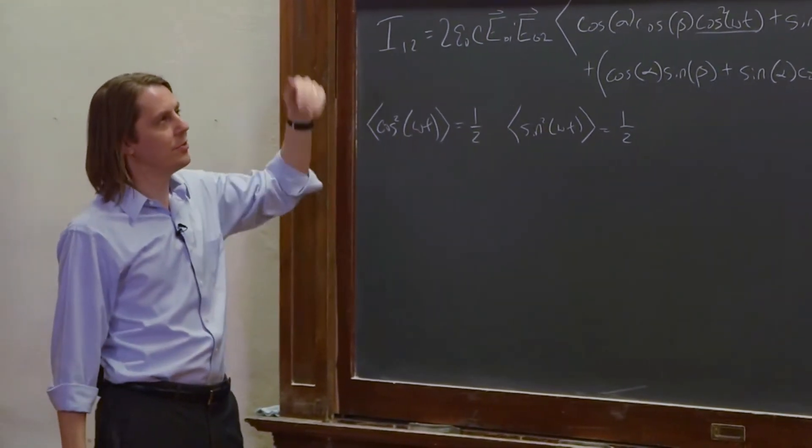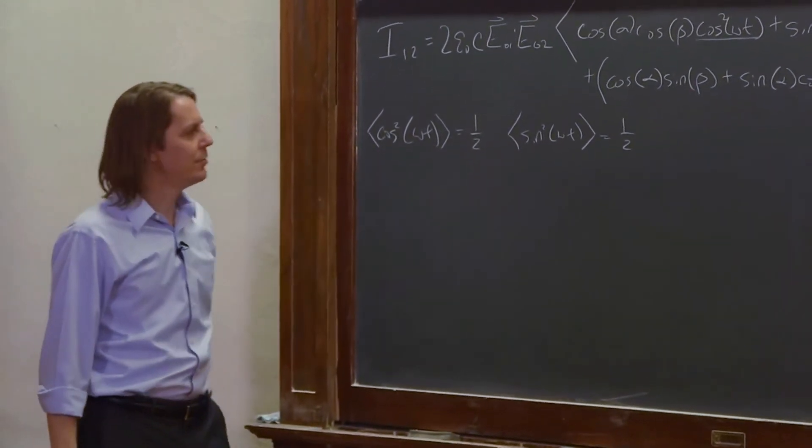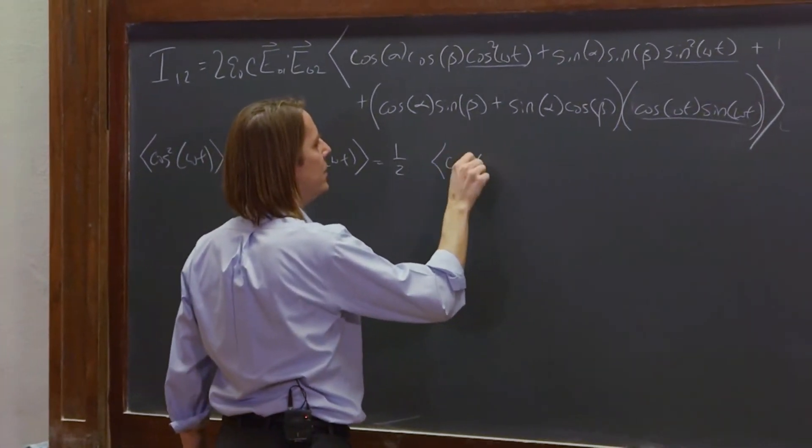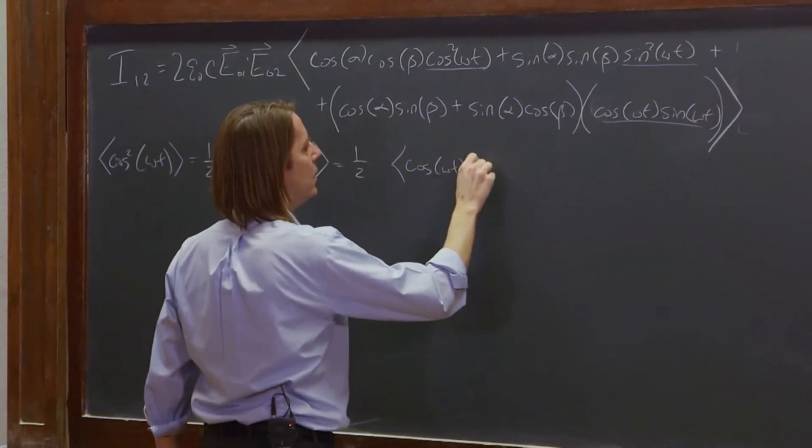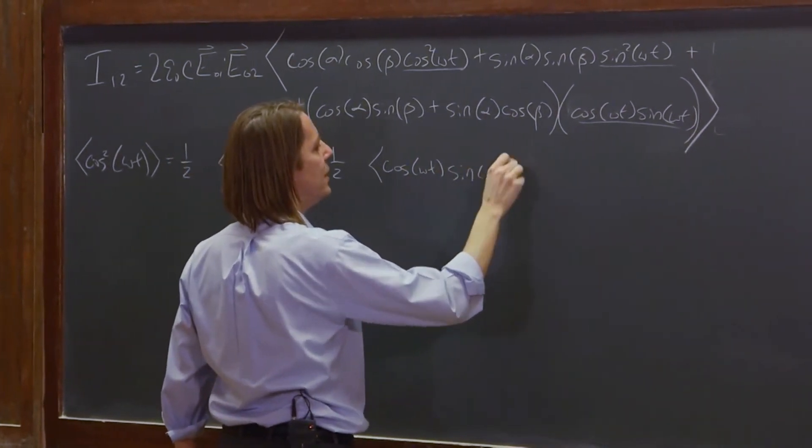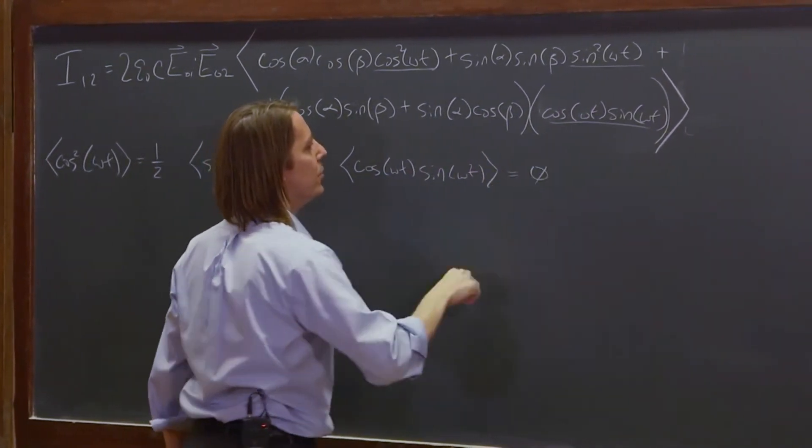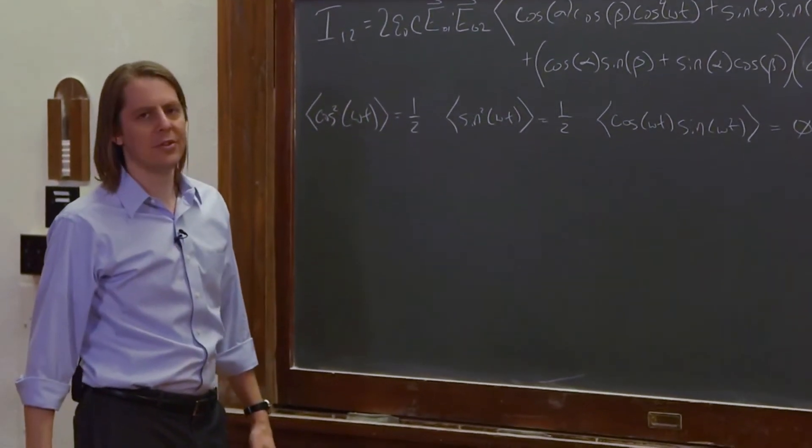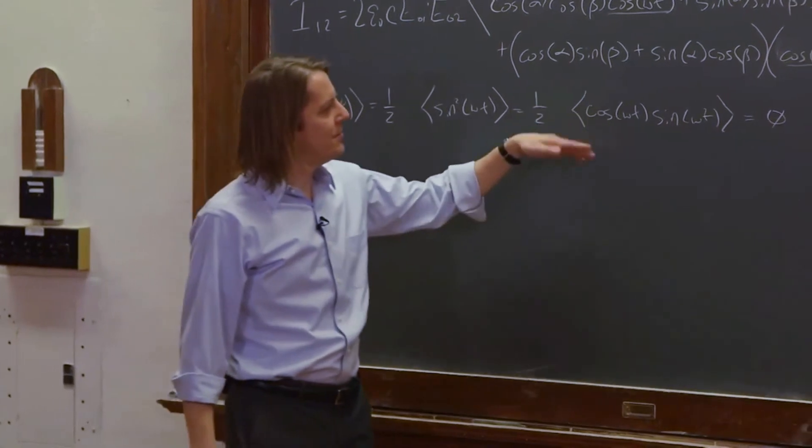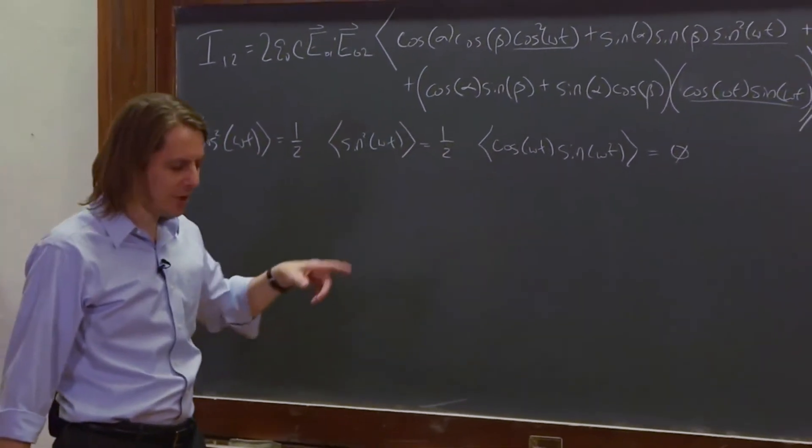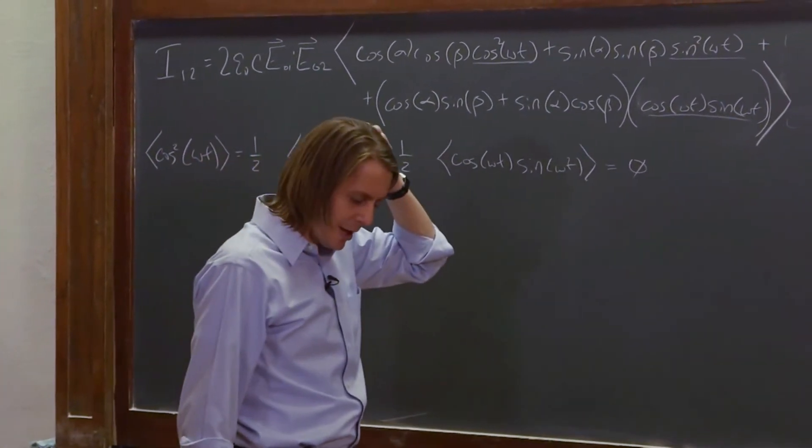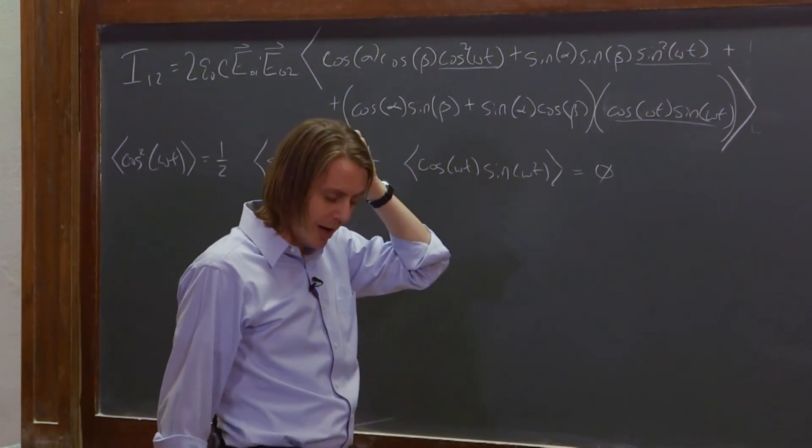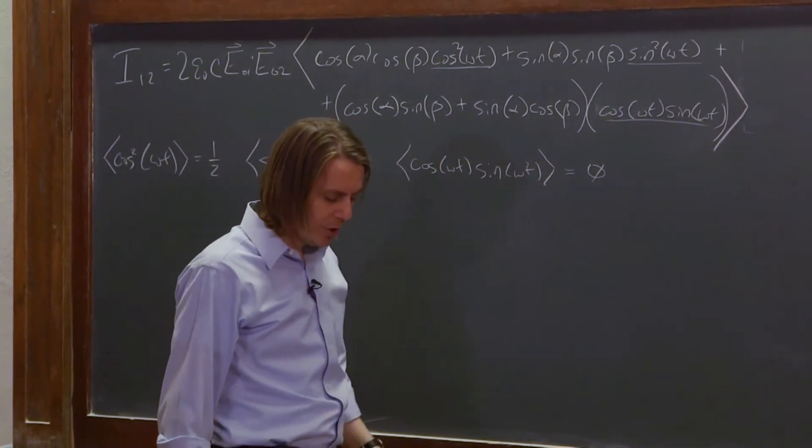Because it oscillates between 0 and 1 symmetrically, so the average value is probably a half. And the time average of cosine omega t sine omega t is 0. That's another reason we did it this way, is it gets rid of a lot of the stuff. If you want to picture it, imagine the plot sine omega t, cosine omega t. It oscillates between positive and negative uniformly. So the average value over many cycles would be 0.